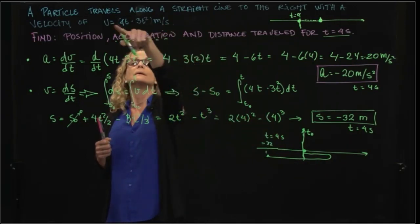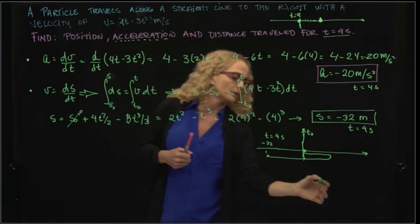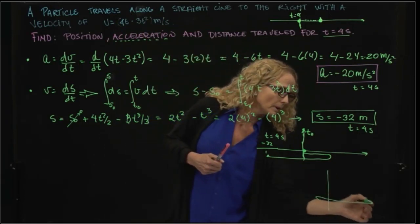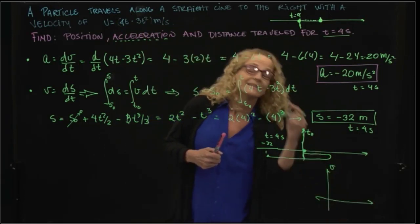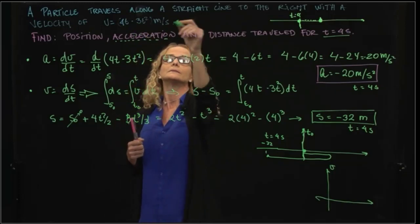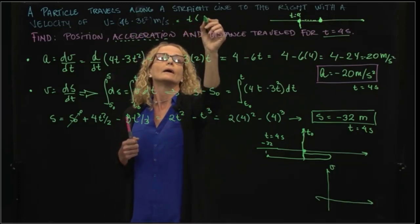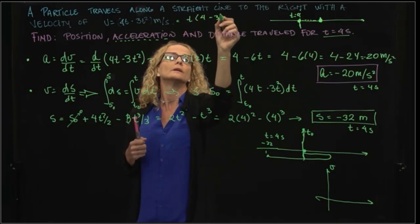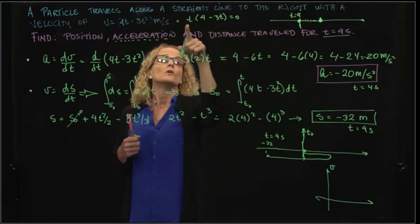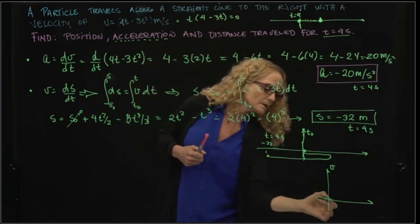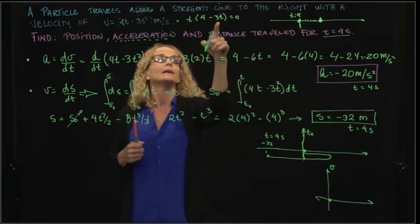Because if we analyze this equation right here, and we plot our velocity, this is a parabolic equation, and we can actually say that 4t - 3t² = 0.